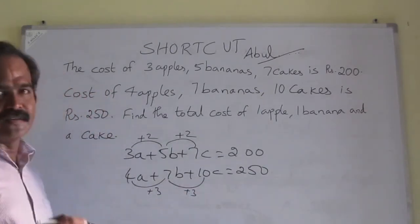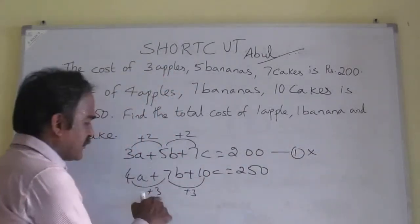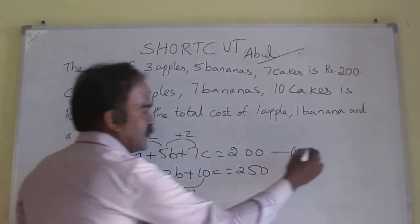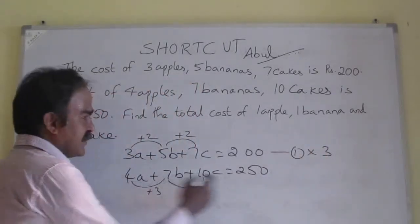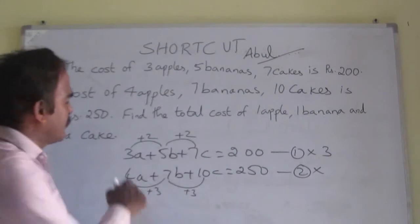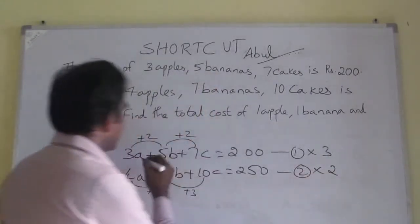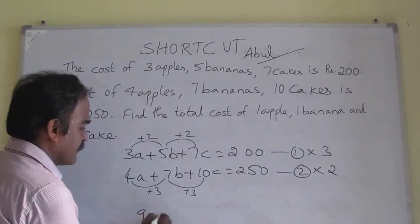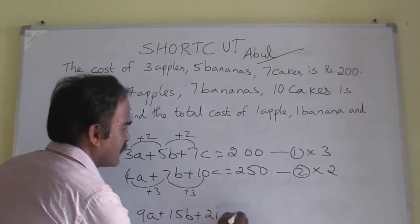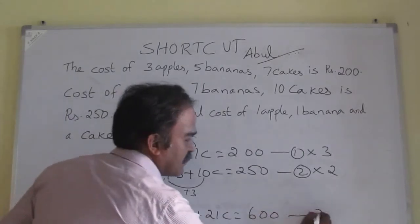What I suggest is: take equation 1 and multiply it with the difference of the second equation, which is 3. And multiply the second equation with the difference of the first equation, which is 2. So equation 1 multiplied by 3 gives: 9 apples, 15 bananas, 21 cakes is Rs. 600. This is equation 3.